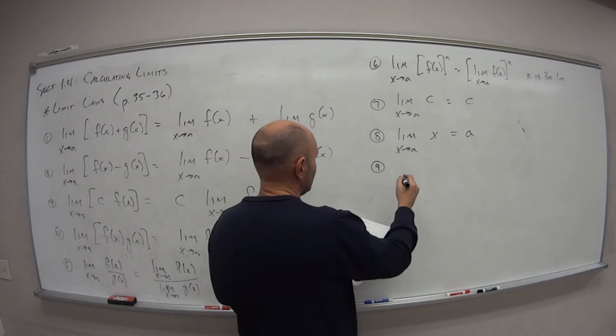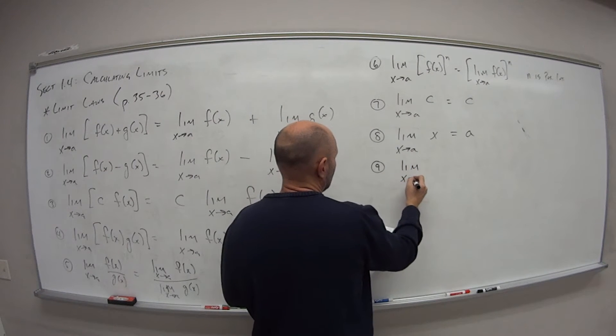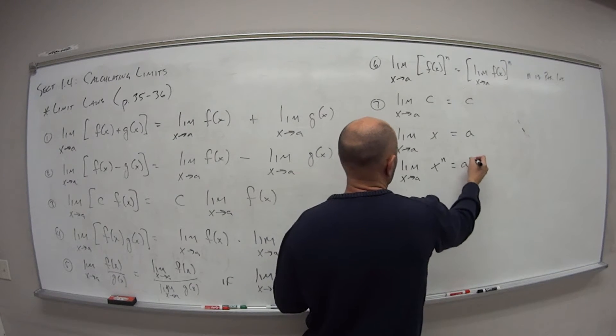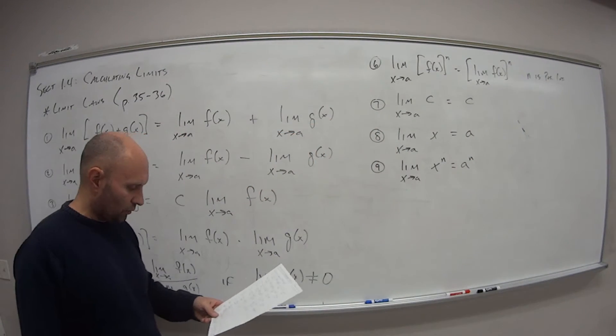For nine, if I have the limit as x approaches a of x to the nth power, this is just equal to a to the nth power.